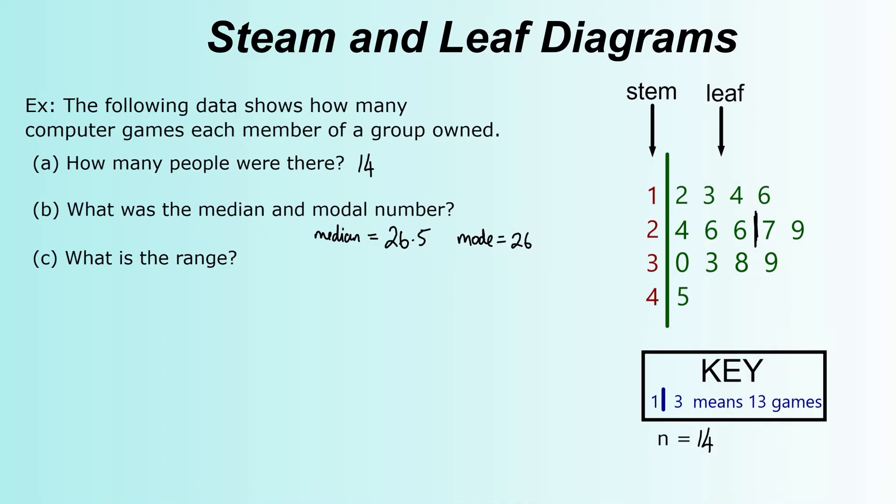The range is your highest take away your lowest. So the highest number was 45 take away your lowest number, which is 12. That gives us 33. So quite a big range of numbers in that data.